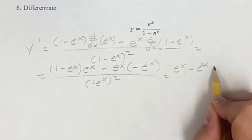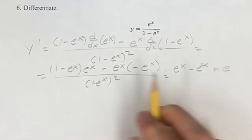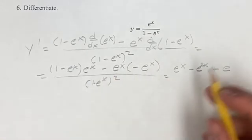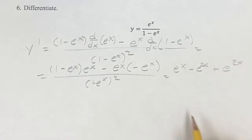And then minus minus is going to be plus. Again, multiplying terms you can add their exponents when they have the same base. So e to the 2x.